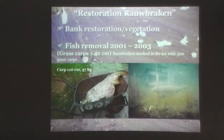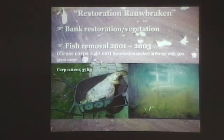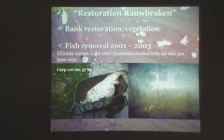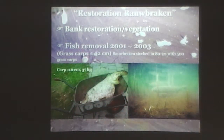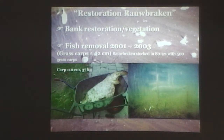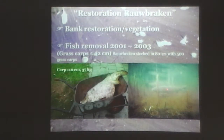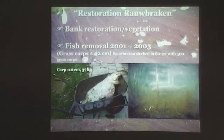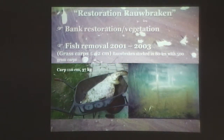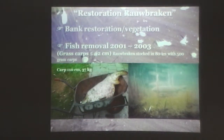That was not the entire thing that has been done. Before that, already the banks had been restored, the vegetation managed, and an attempt was made to reduce the external loading. Some fish were removed — there was a nice carp in there. In the 80s, they wanted to get rid of the submerged plants, so they dumped in about 500 grass carps.